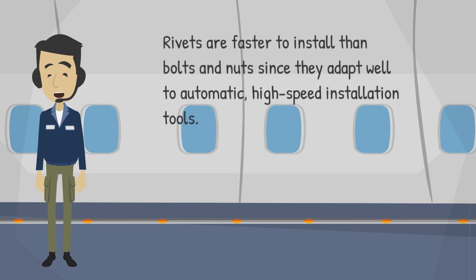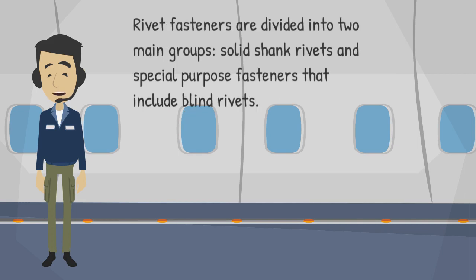Rivets are faster to install than bolts and nuts, since they adapt well to automatic, high-speed installation tools. Rivet fasteners are divided into two main groups: solid shank rivets and special purpose fasteners that include blind rivets.